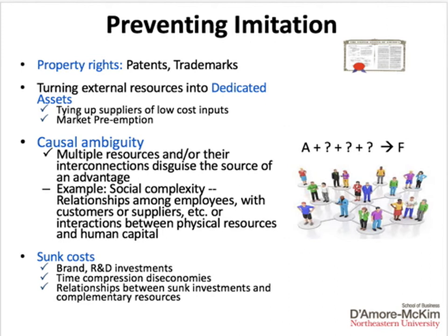Finally, the investments we've already made to develop our advantage — things like spending money on brands, spending money on innovation for new products and services, or the development of relationships with customers and suppliers — are all sunk costs we've invested in over time. As a result, rivals trying to copy us are also going to have to sink money, time, and valuable resources to imitate us. The greater the level of sunk costs, the greater the likelihood that we can prevent imitation as a result of the path dependency we've built up over time.